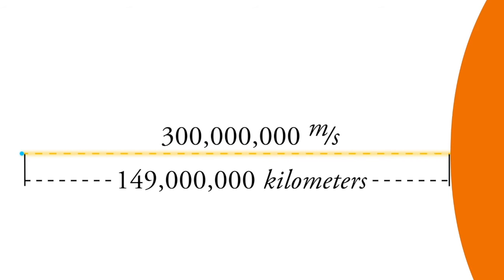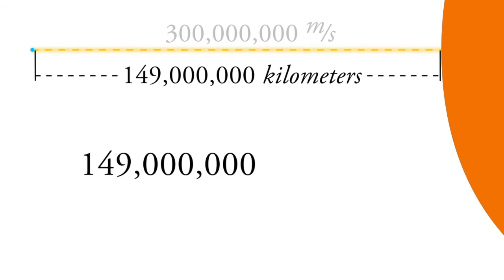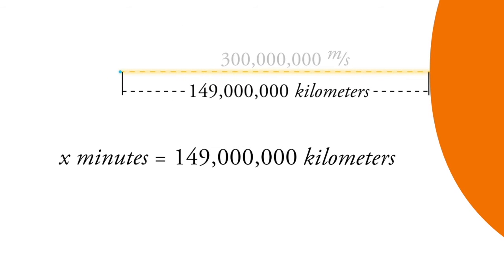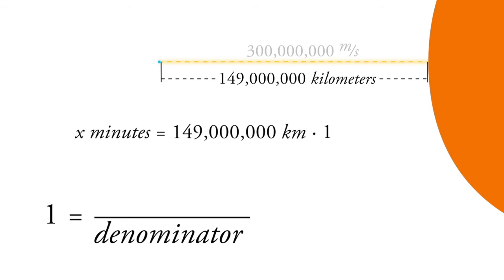That's my pro tip for you. So what we're going to do is we're going to start with this 149 million, and that's in kilometers. So we'll put the units there, kilometers. And we want to turn that into minutes. How do we turn kilometers into minutes? Well, we keep multiplying by one. So as long as the value in the denominator is somehow equal to the value in the numerator, then we can multiply it and not affect the original value.